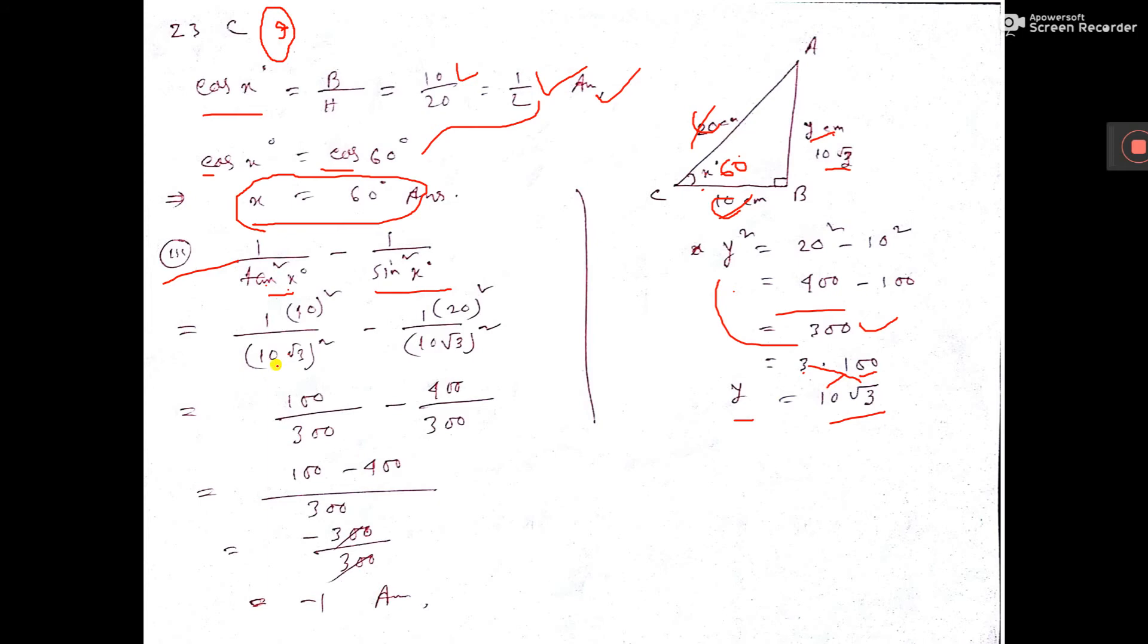Now tan means perpendicular by base. Perpendicular is 10 root 3, base is 10. So that 10 is not written here, it is written above. Whole square is there, that is why both places whole square is given.